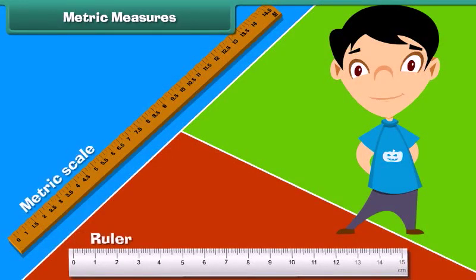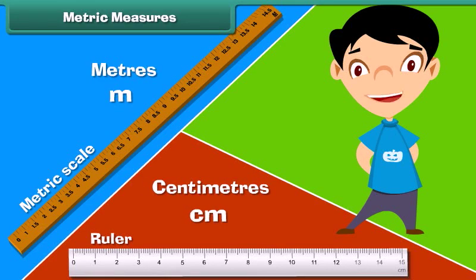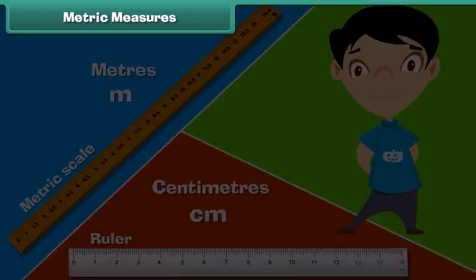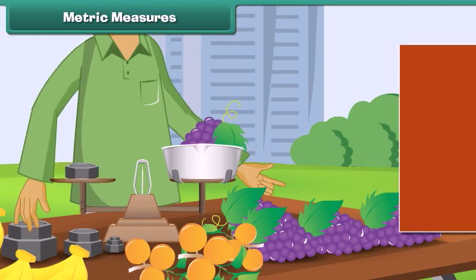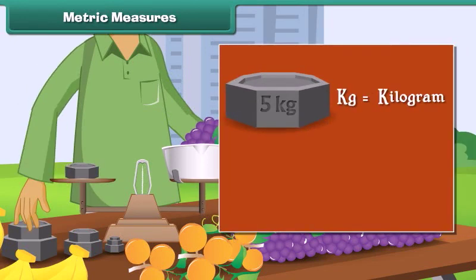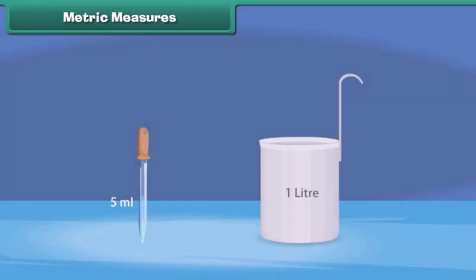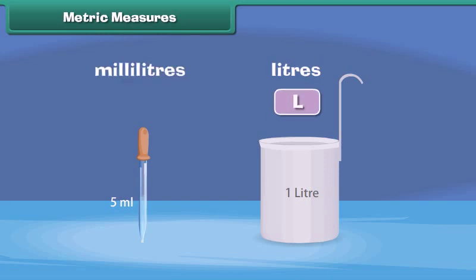Metric measures: Meter is represented by M and centimeter by CM. The weight of an object is measured in grams and kilograms. The symbol KG represents kilogram while the symbol G represents gram. Capacity is measured in liters and milliliters. L represents liter and ML represents milliliters.